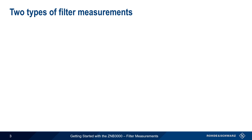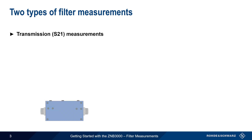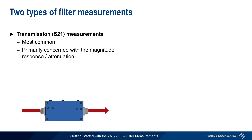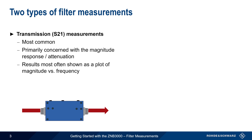Let's start with a brief review of the two types of filter measurements. Transmission or S21 measurements are the most common filter measurement, and in this case we're primarily concerned with the magnitude response of the filter — that is, how much the filter attenuates signals as a function of frequency. Transmission measurement results are therefore most often shown as a plot of magnitude versus frequency.